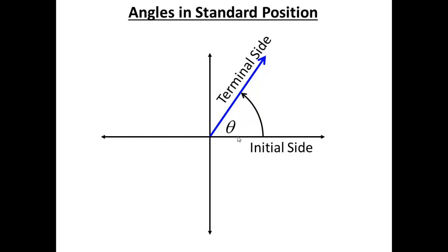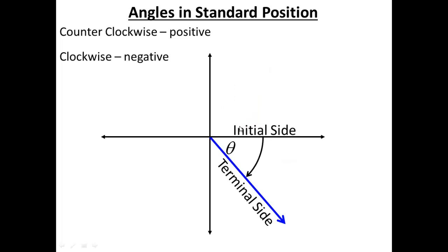The terminal side can be anywhere in the x-y coordinate plane. If we measure counterclockwise, that is a positive angle. If we measure clockwise, that is a negative angle. So we start at zero — the positive x-axis is zero. Measuring up is the positive direction; measuring down is the negative direction.